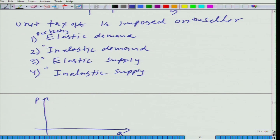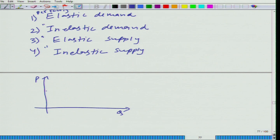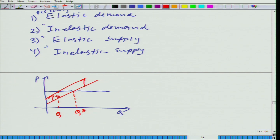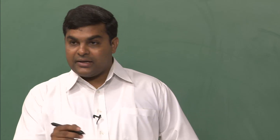When we have perfectly elastic demand, how does it look? Horizontal — so the demand curve is horizontal. For supply, we can pick any supply curve, and when tax t is imposed on the supply curve, it shifts upward. That shift is equivalent to t. This was the equilibrium quantity q star earlier, and this is the new equilibrium quantity q star dash at price p star. The demand curve is not shifting; the supply curve has shifted upward.